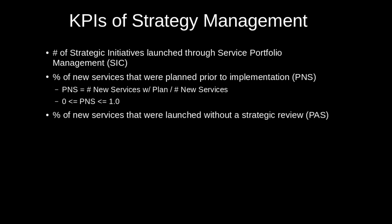The PAS represents new services launched without a strategic review — the inverse of the PNS. If you sum the PNS and PAS, they should always equal one. So the PAS is the number of unplanned services divided by the total number of new services — again, a constrained percentage somewhere between zero and one.